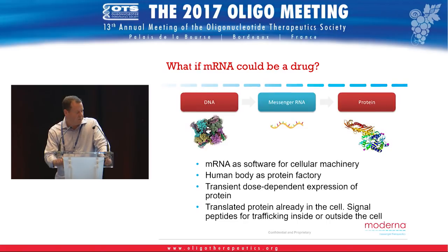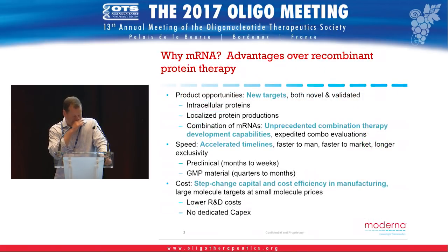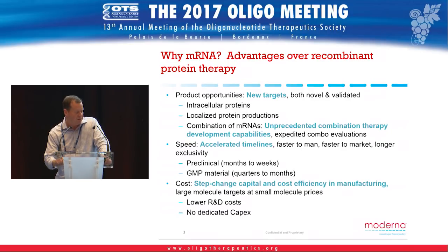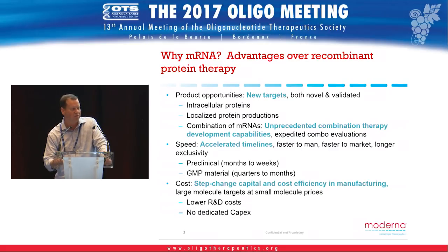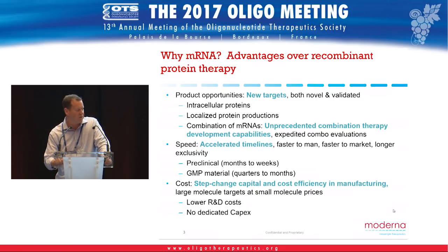Additional advantages over recombinant protein therapy include access to new targets — intracellular proteins represent a significant advantage for messenger RNA versus recombinant protein therapeutics. Combinations of messenger RNAs also offer unprecedented advantages. For example, in our pipeline we have a CMV vaccine that actually contains six different messenger RNAs, allowing expression of the complete pentamer plus GB complex of that antigen — a really complex antigen whose structural features you can measure.